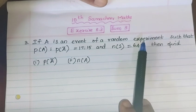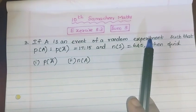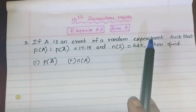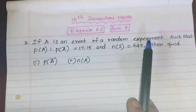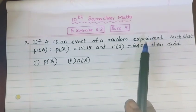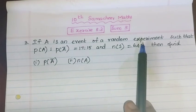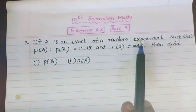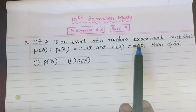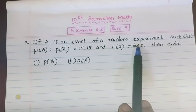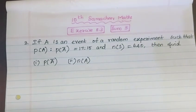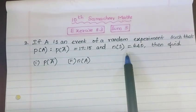Random experiment: the exact outcome of the experiment cannot be predicted. We will just have the possibilities. If you toss a coin, head and tail are the outcomes, but we cannot predict correctly. Sometimes it can be correct, but we cannot say the exact outcome of the experiment — head or tail. That is called a random experiment.